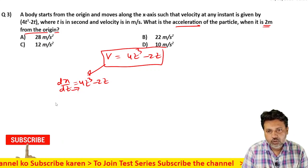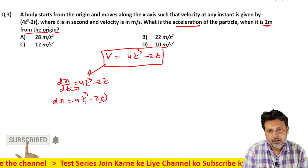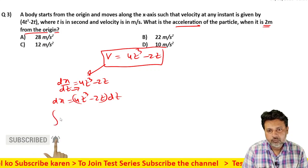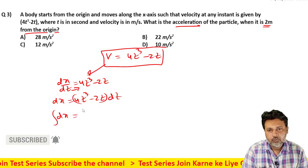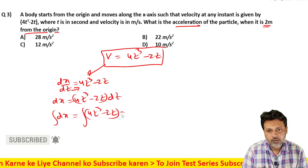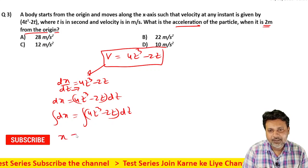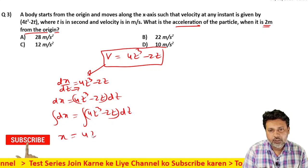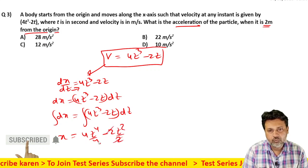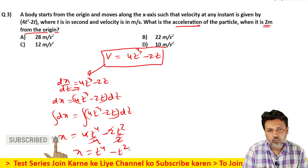dt को cross multiply करते हो: dx = (4t³ minus 2t) dt. और इसको integrate कर दो: ∫dx = ∫(4t³ minus 2t) dt. यह क्या आएगा — x = 4t⁴/4 minus 2t²/2, यानि x = t⁴ minus t².